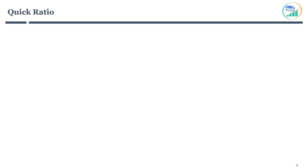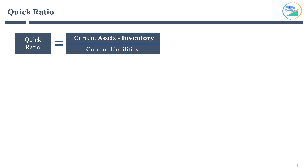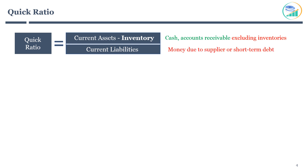Let's move on to the next — quick ratio. This ratio is like the current ratio but more stringent. It is calculated as current assets minus inventory divided by current liabilities. Current assets include assets that can be converted to cash within a year, such as cash and accounts receivable. Please remember, while evaluating the quick ratio, inventory is excluded from current assets. Current liabilities refer to liabilities payable within one year, like money due to the supplier or short-term debt obligations. Quick ratio measures a company's ability to meet its short-term obligations with its most liquid assets, and therefore excludes inventories from current assets.